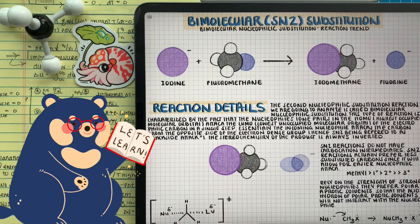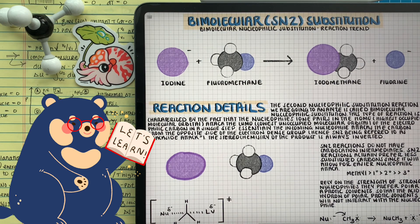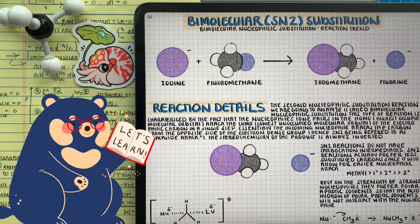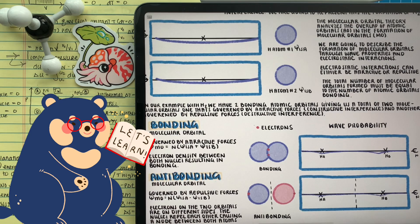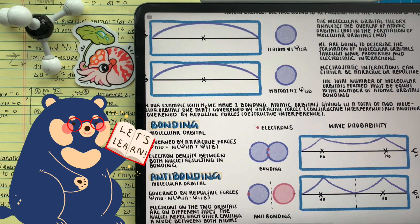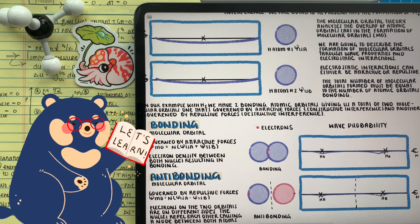For example, when we looked at those SN2 reactions, the highest occupied molecular orbitals of the nucleophile is interacting with the lowest unoccupied molecular orbitals of the electrophile. Now, in order to move on and gain a big holistic picture about what we're talking about, we're going to review just a little bit.